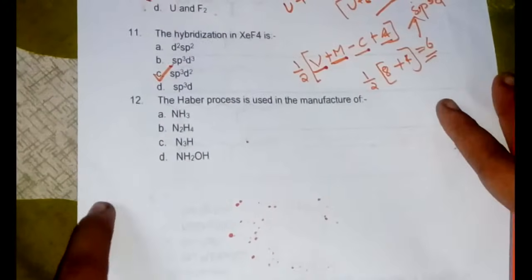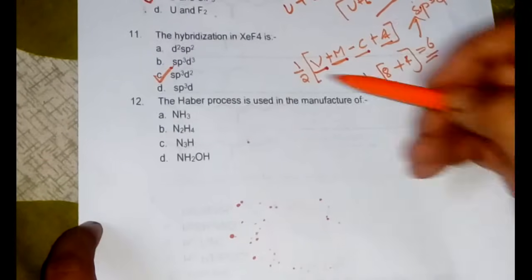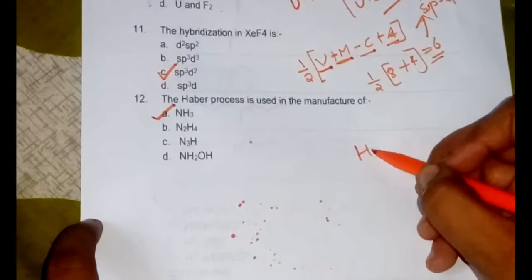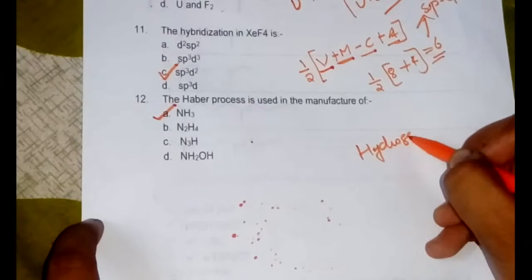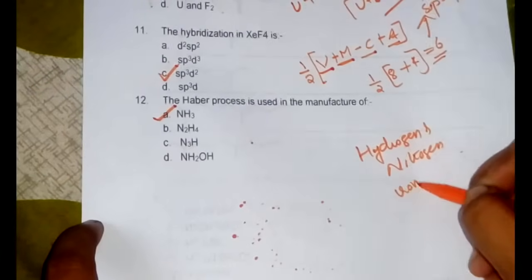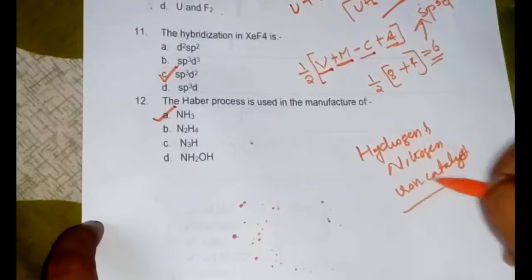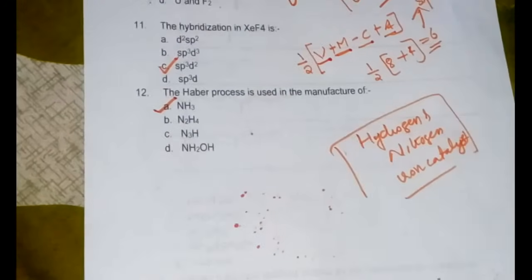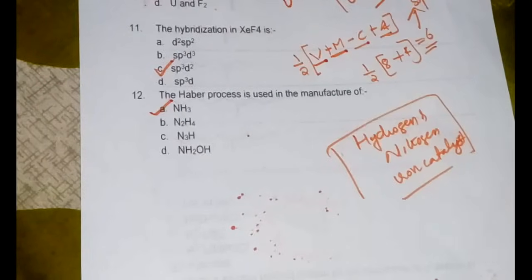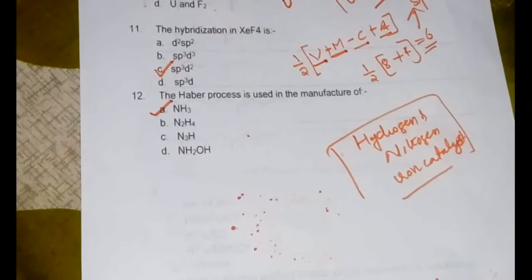Now the final question here is the Haber process is used in a manufacturer. This is a very simple question because Haber process is the manufacture of ammonia from hydrogen and nitrogen using iron catalyst at a high temperature and pressure. So that is Haber process and you should remember the name. In Pondicherry University you can see a trend of asking the names of the processes or cells or systems and ask what is produced or manufactured. The names of the industrial manufacturing processes are usually asked, so please remember that.